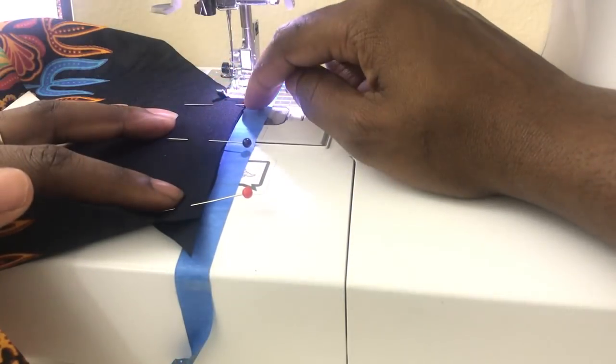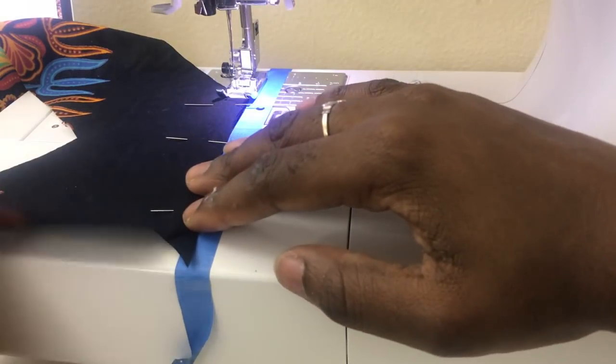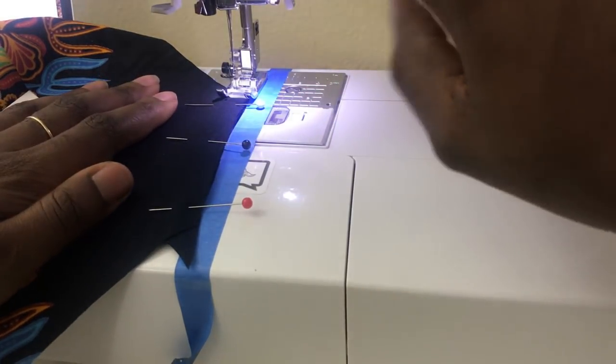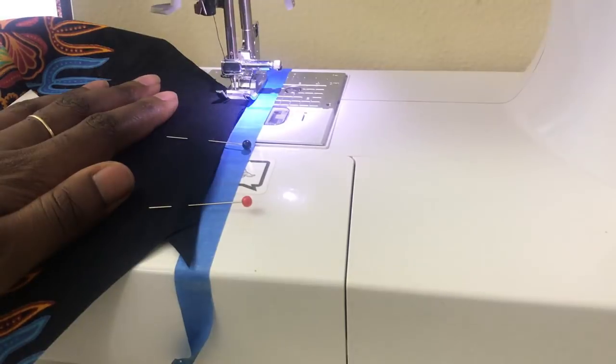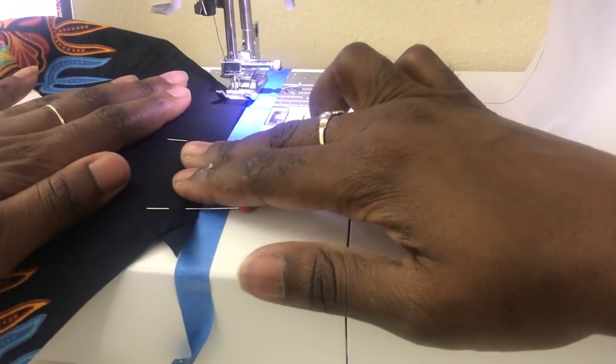Using a 3/8 inch seam allowance, go ahead and lower your needle, begin sewing, and backstitch at both ends.